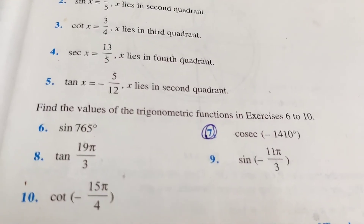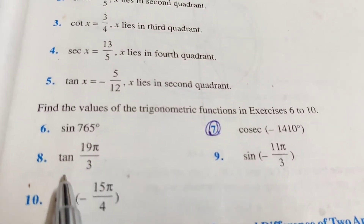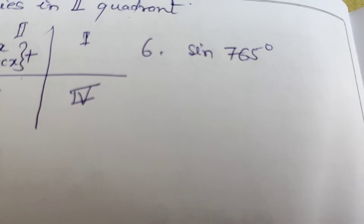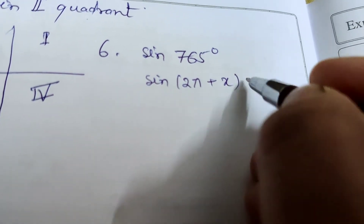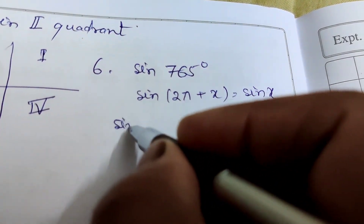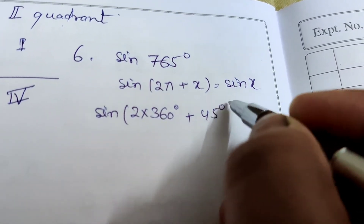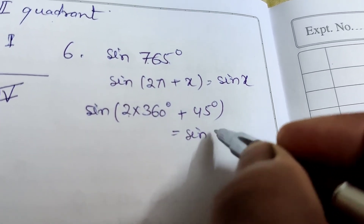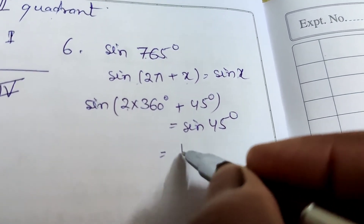Now finding values of trigonometric functions for Exercise questions 6 to 10: large or negative angles. Question 6: sin 765°. We use sin(2π + x) = sin x. We can write 765° = 2×360° + 45°, so sin 765° = sin 45° = 1/√2.